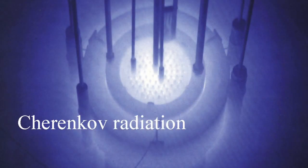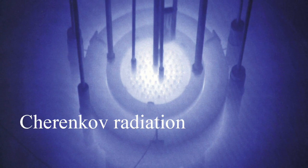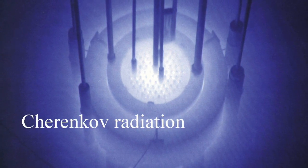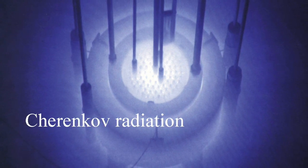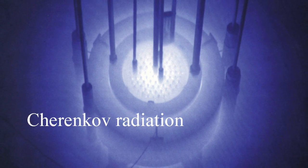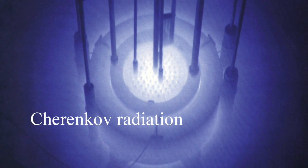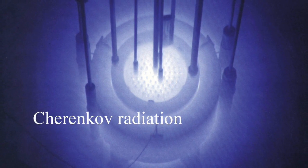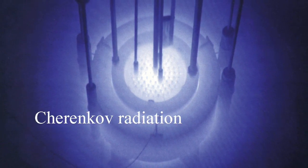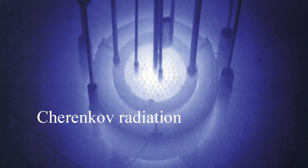Bizarrely, tachyons would slow down if they gained energy, and accelerate if they lost energy. This leads to a problem in the case of charged tachyons, because charged particles that move faster than the speed of light in the surrounding medium give off energy as Cherenkov radiation. Charged tachyons would continuously lose energy even in a vacuum through Cherenkov emission. This would cause them to gain speed, thus lose energy at an ever greater rate, accelerating even more — leading to a runaway reaction and the release of an arbitrarily large amount of energy.